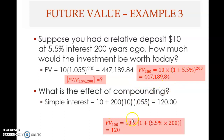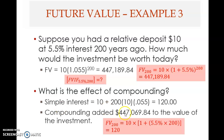When you invest over a longer period, the compounding effect becomes very pronounced and substantial. For short periods — two, three, four, or five years — the difference between compound interest and simple interest may not be very significant. But over 200 years, compounding added approximately $447,069.84 to the value of the investment.